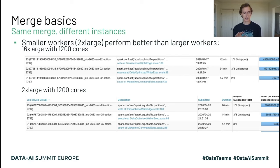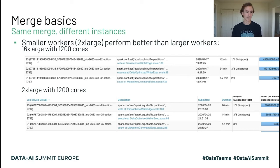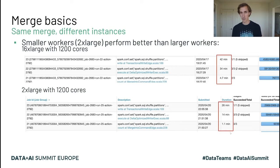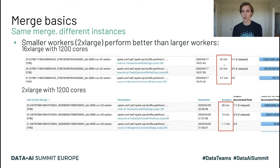These windows you see here — it's the same exact merge statement, the same exact data, ran one after another. The only difference is the instance type. The top window used a 16X large, the second is a 2X large. Both with 1,200 cores. Reading from the bottom up: phase one took 1.1 minutes with the 2X large, but 4.7 minutes with the 16X large. Phase two: 14 minutes versus 34 minutes. Phase three: 26 minutes versus 42 minutes.